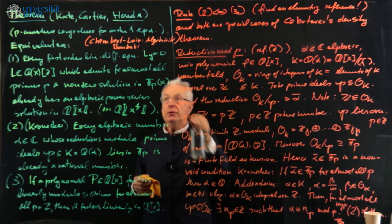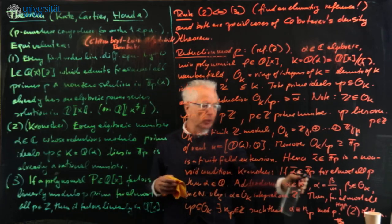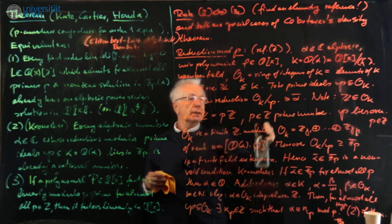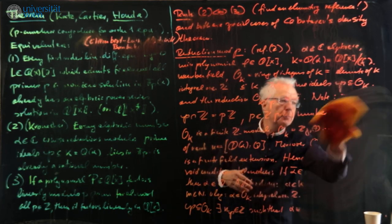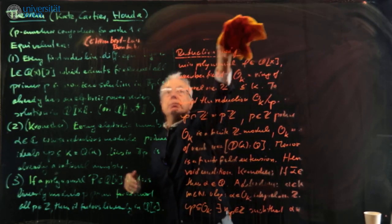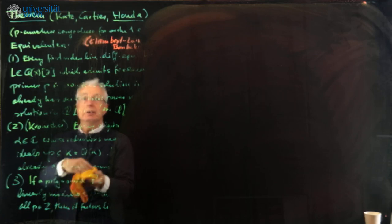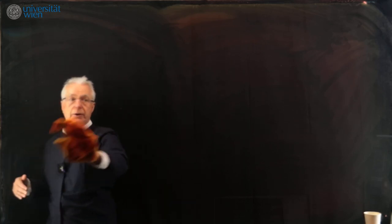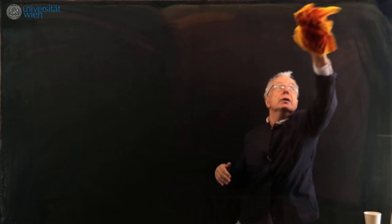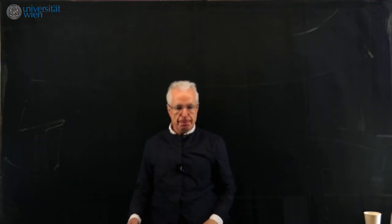You can reformulate Kronecker as follows: if alpha bar in Fp for almost all p, then alpha in Q. I need an addendum which is used in the proof. There's also an article by Chambert-Lohar, algebraicity, a Bourbaki talk, which embeds the theory in the much more general theory about reductions of Lie groups modulo p.